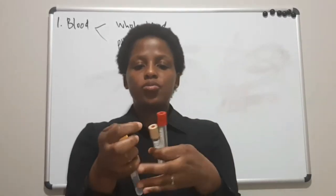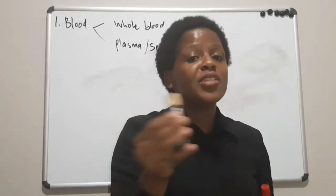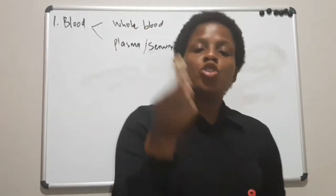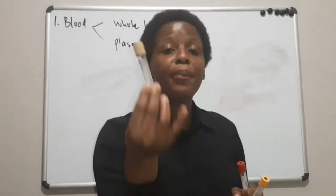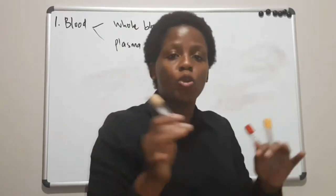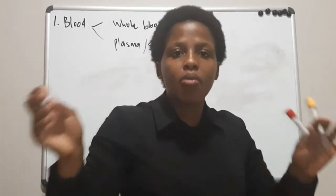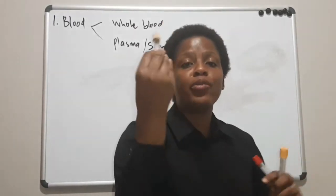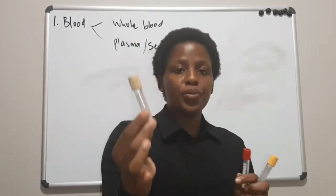The first tube is the plain tube. By plain, it means there's nothing in it — no anticoagulant, nothing. If your blood is collected in this plain tube, the blood will clot automatically, because when blood is outside the body it clots naturally. After spinning down a sample in this tube, you will get serum.